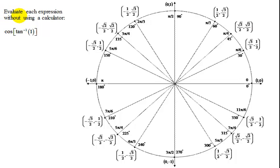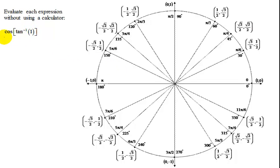In this problem, I need to evaluate without using a calculator this expression: the cosine of the inverse tangent of 1. I think this is on the unit circle, so I've got my unit circle over here.